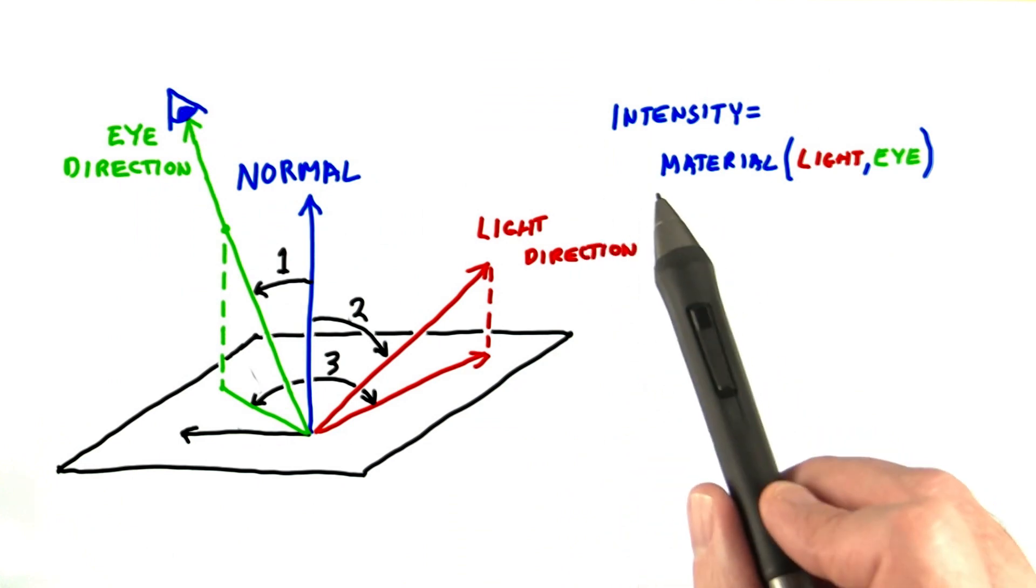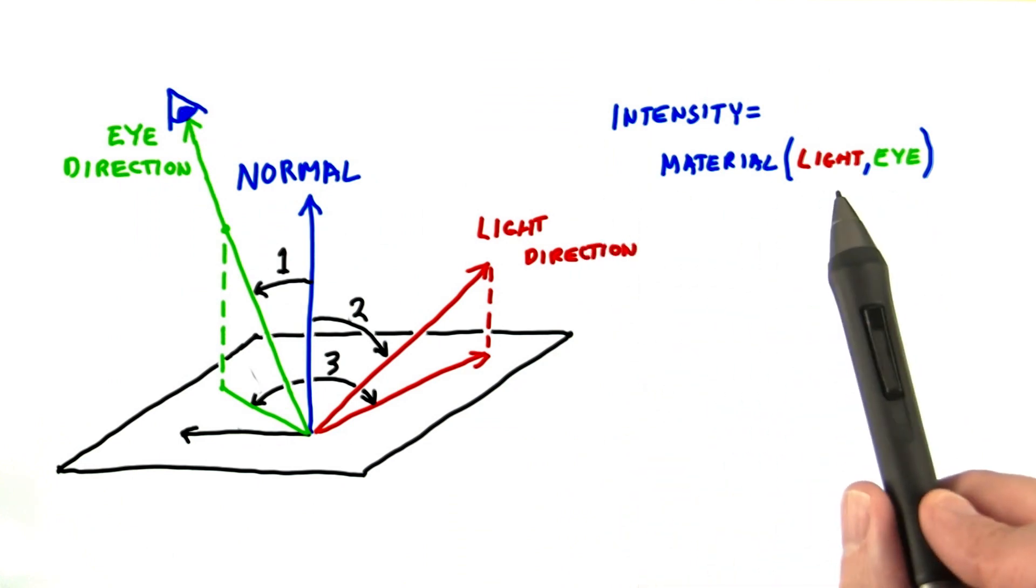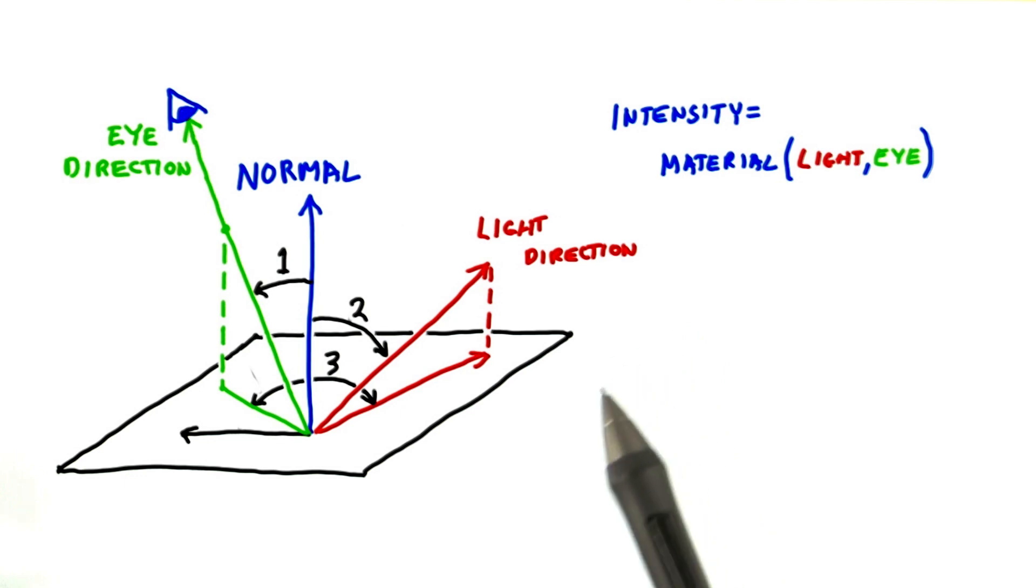Written this way, our BRDF needs four numbers: two for the light and two for the eye. But if you think about it, most materials really only need three—these two altitude angles and this azimuth between them.